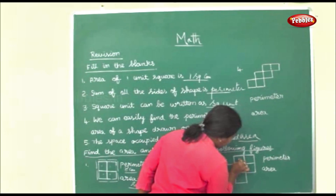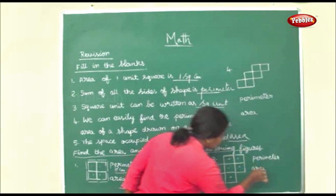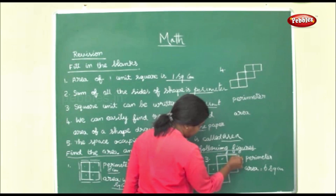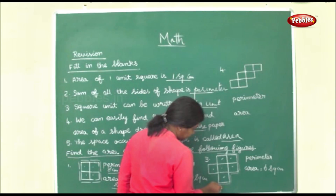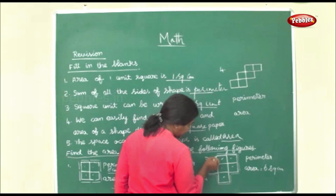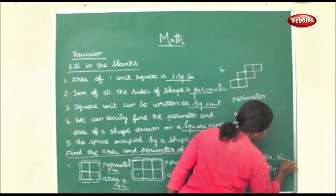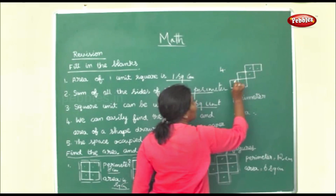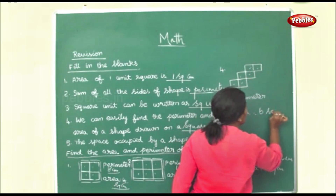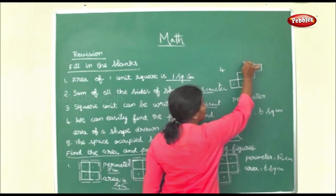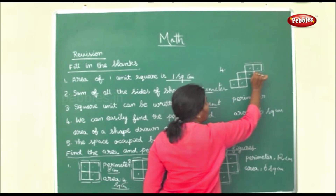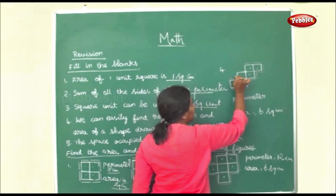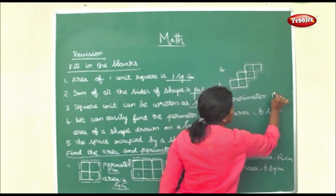Same way here: area — one, two, three, four, five, six — 6 square centimeters. Perimeter: one, two, three, four, five, six, seven, eight, nine, ten, eleven, twelve — 12 centimeters. Here again, count the area first: one, two, three, four, five, six — 6 square centimeters. Perimeter, just measure the boundaries: one, two, three, four, five, six, seven, eight, nine, ten, eleven, twelve, thirteen, fourteen — 14 centimeters.